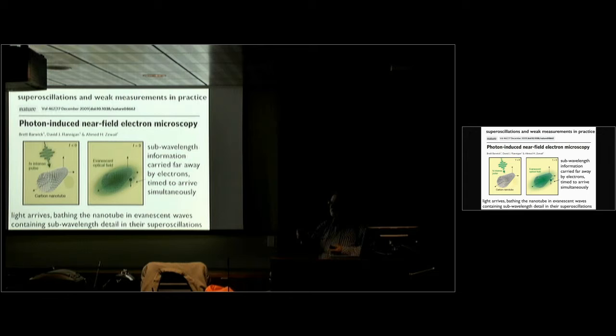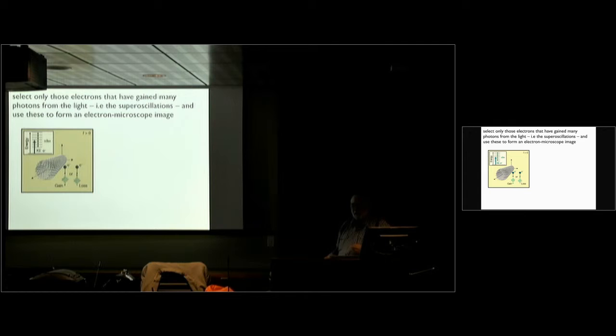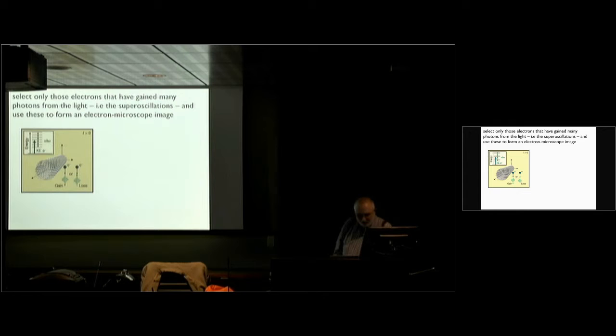How will they do it? Because those electrons, which bathe the carbon nanotube, of course they see these photons, and they'll get these kicks — what I call super kicks. And those electrons, like the others, will be transmitted far away. And if you select only those electrons which have gained a substantial number of photons — the ones which respond to the supra-oscillations — you select only those and make an image, then you can see fine detail. It really is a weak measurement; you're selecting the electrons that carry the fine detail.